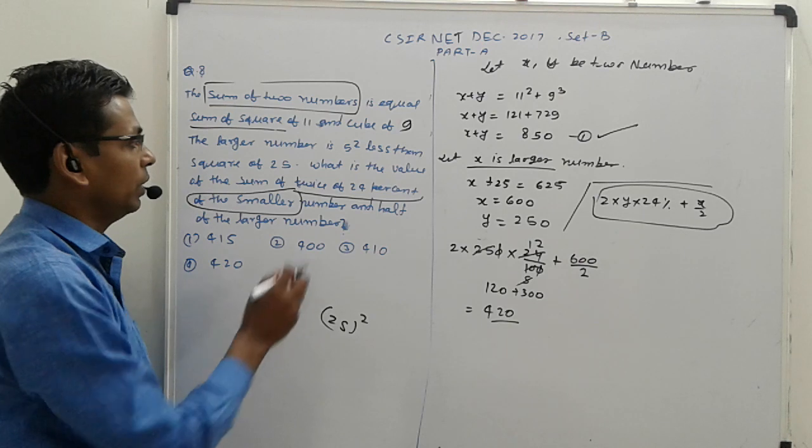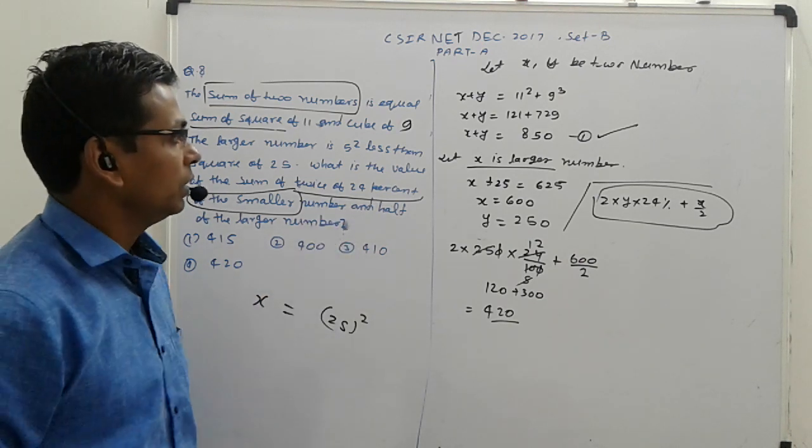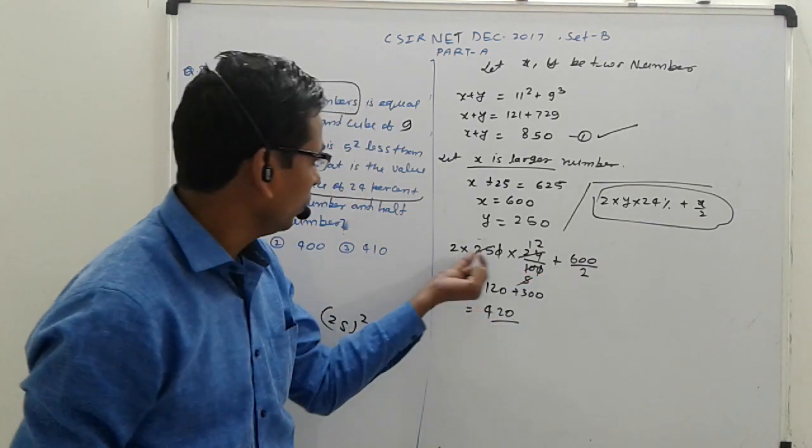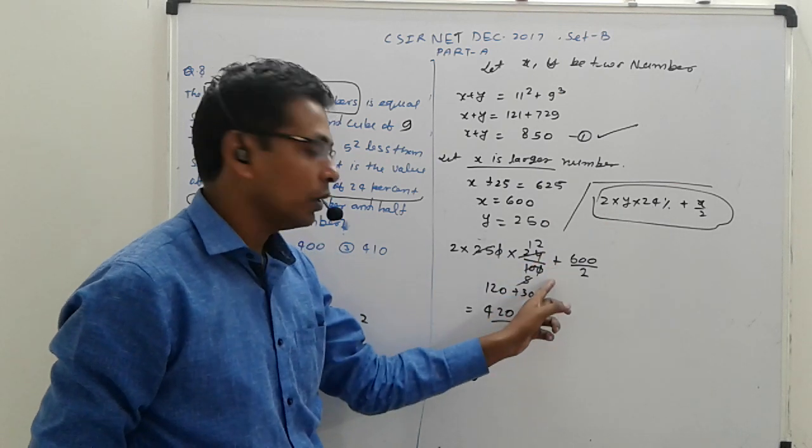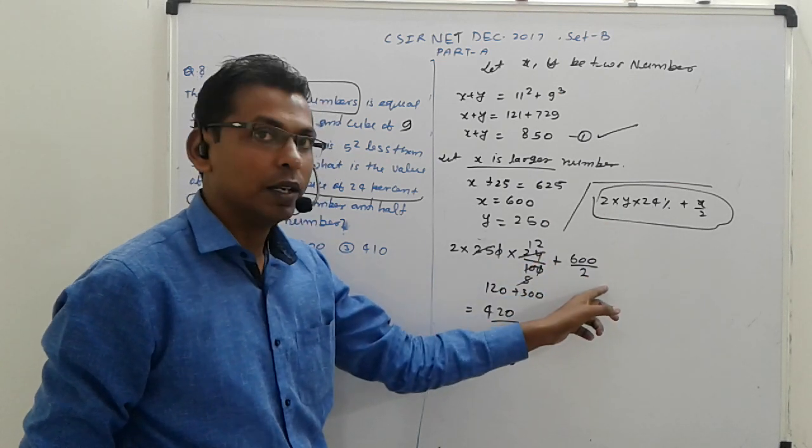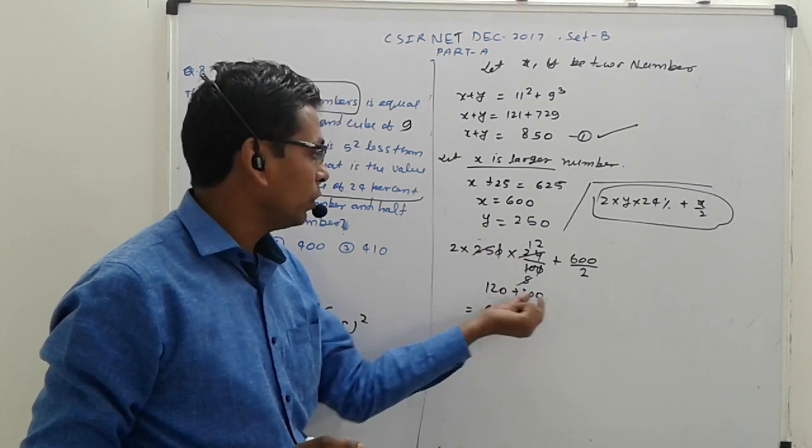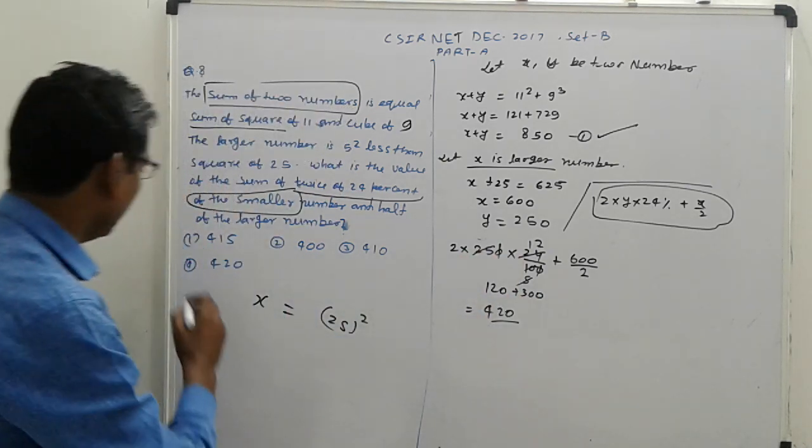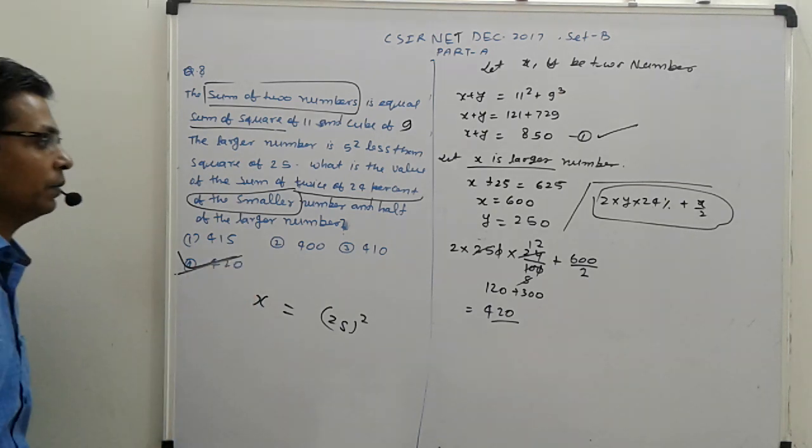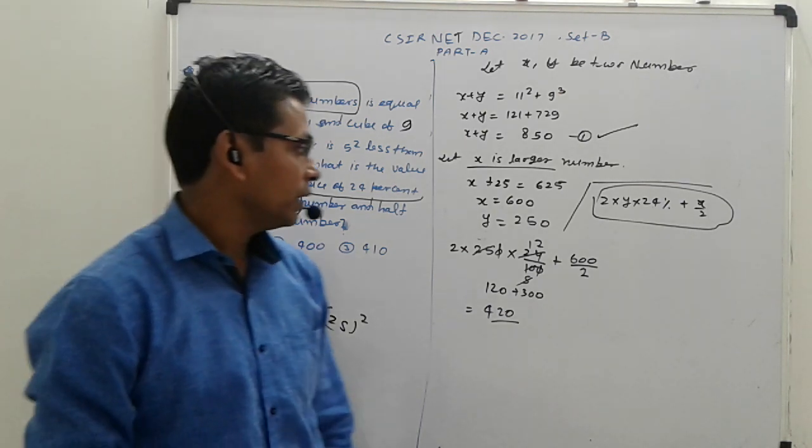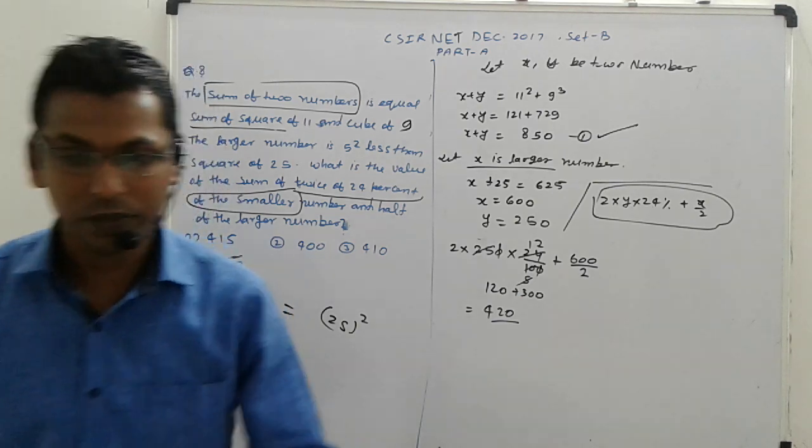The smaller number is y, so 2 times 0.24 times 230 plus x divided by 2. That's 2 times 55.2 plus 620 divided by 2. Simplifying, this is 110.4 plus 310, which equals 420.4. So that is your answer. Take care of these types of problems. Next, we'll go to another problem.